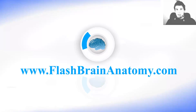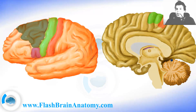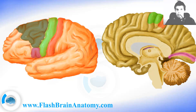Here we have the calcarine fissure, and the cortex around it is the primary visual cortex. It is important for receiving the signal from your eyes.